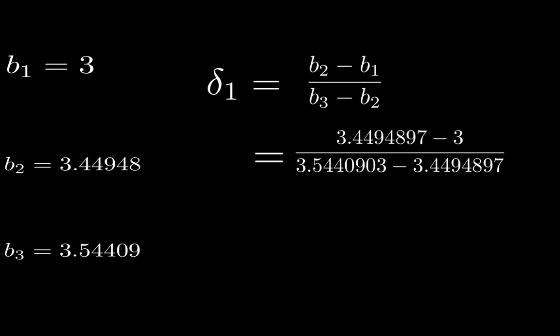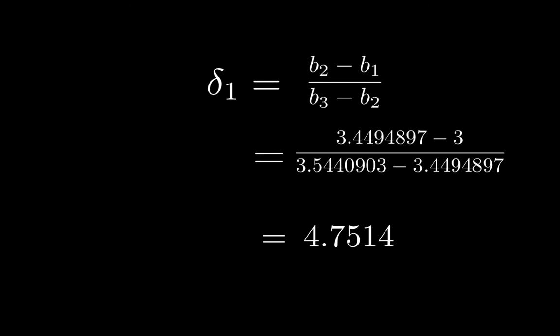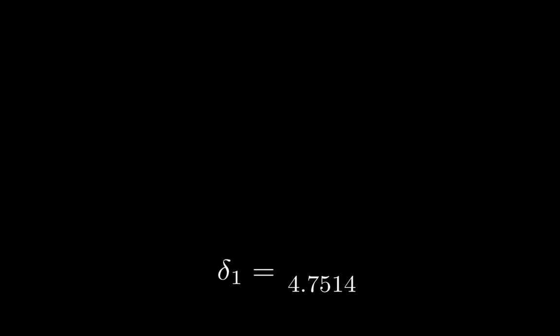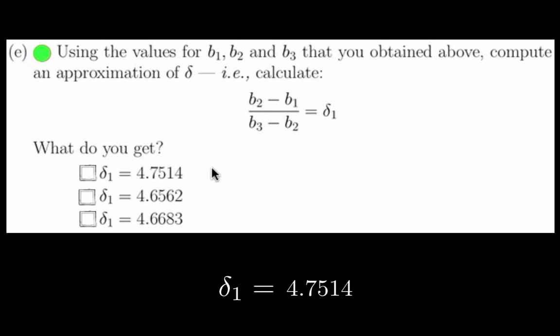We can now combine b1, b2, and b3 to create a first approximation of the Feigenbaum constant. We get a first approximation of 4.7514. This is the answer to question 1e.